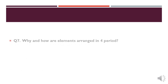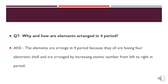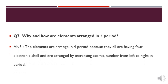Another short question: why and how are elements arranged in the fourth period? Elements are arranged in the fourth period because they all have four electronic shells, and they are arranged in order of increasing atomic number from left to right.